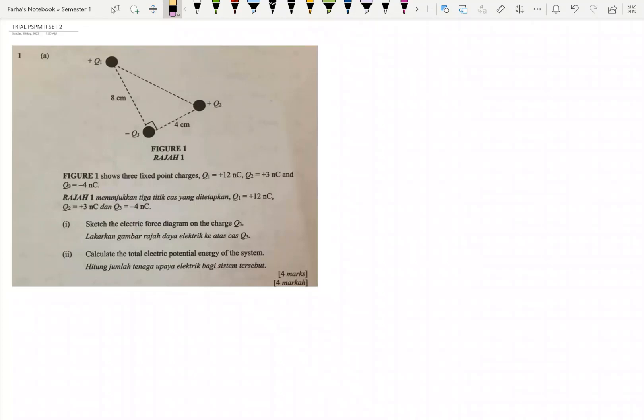Figure 1 shows 3 fixed point charges: Q1 positive 12 nanocoulomb, Q2 positive 3 nanocoulomb, and Q3 negative 4 nanocoulomb. Question 1A1: sketch the electric force diagram on the charge Q3. The reference charge is Q3. Remember the electrostatic force is a vector quantity and has direction as well as magnitude. When adding electrostatic forces, you must take into account the direction of all forces using the vector component as needed.